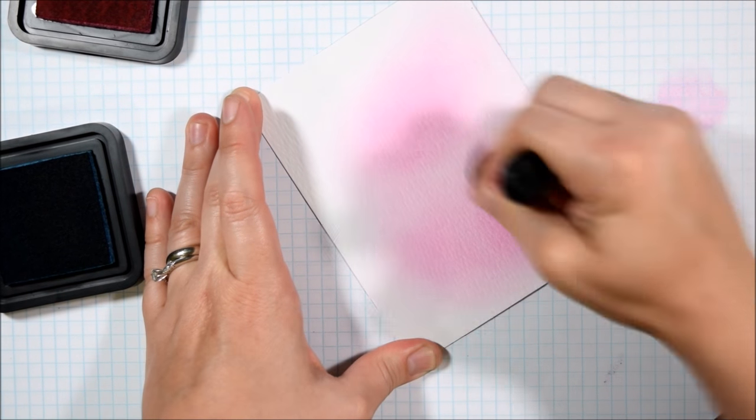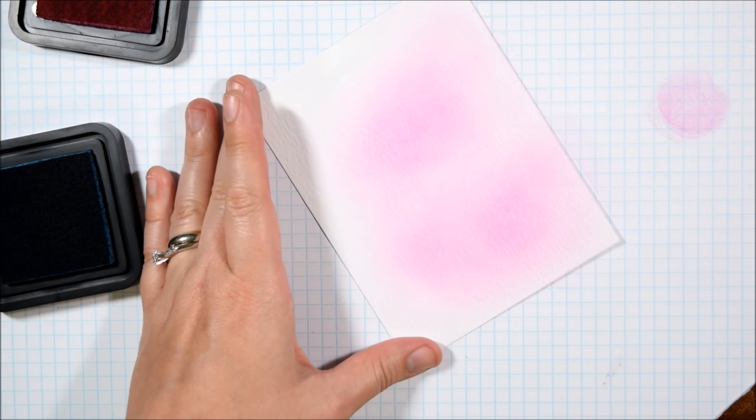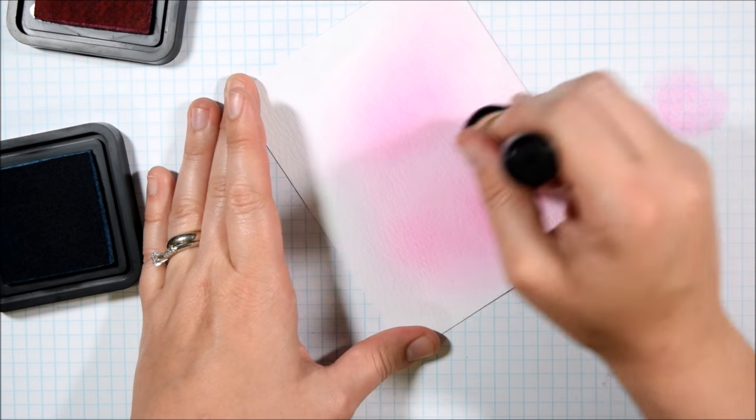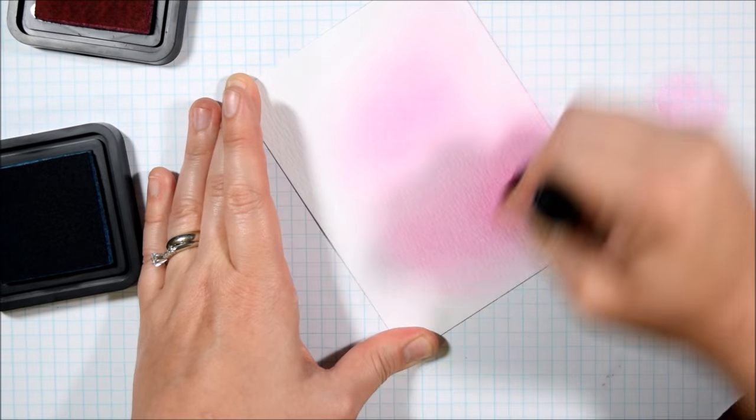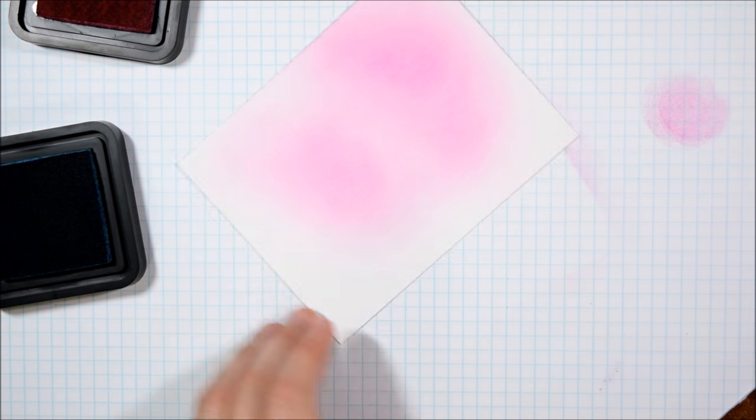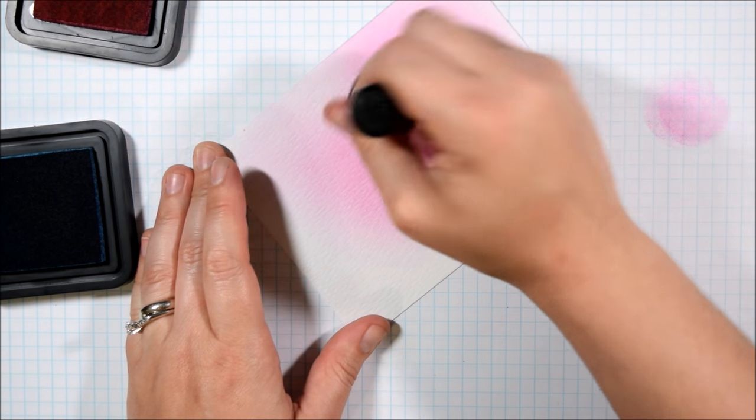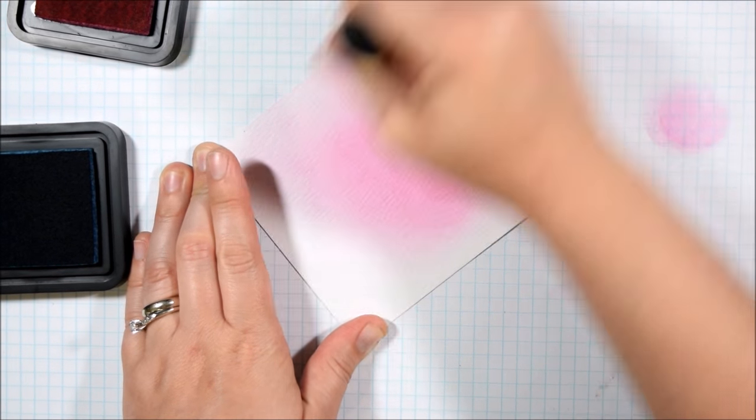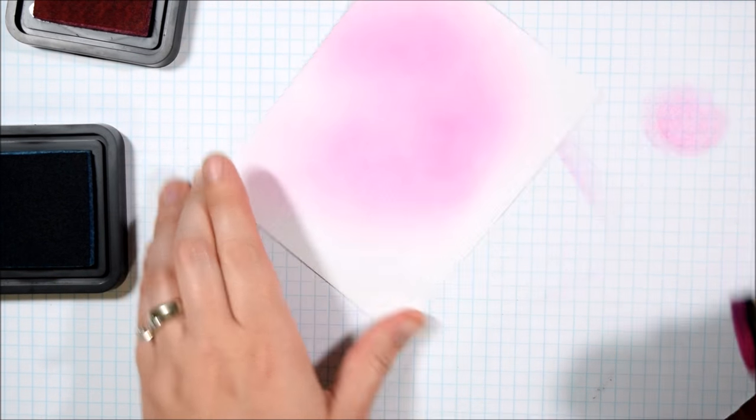I'm starting today on some Tim Holtz watercolor paper because the distress inks blend really well on the watercolor paper, so it'll be more forgiving for this technique. I'm starting with picked raspberry and I don't want to completely cover the base. I want some variation.